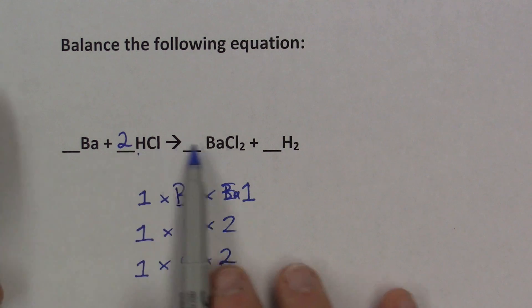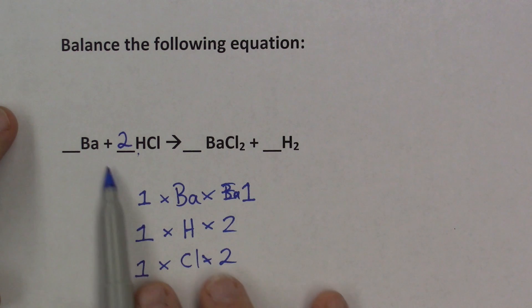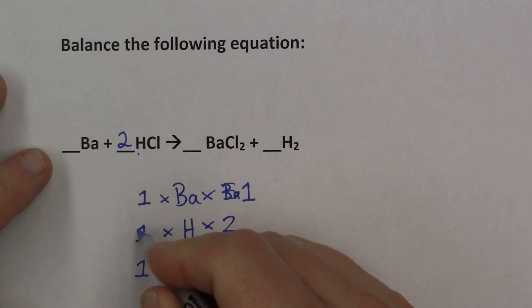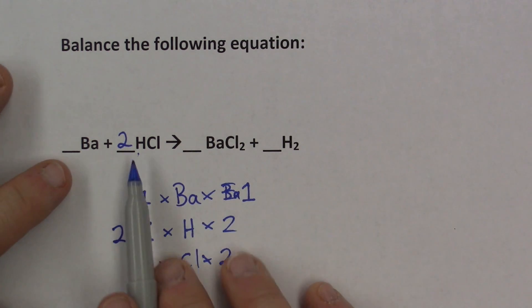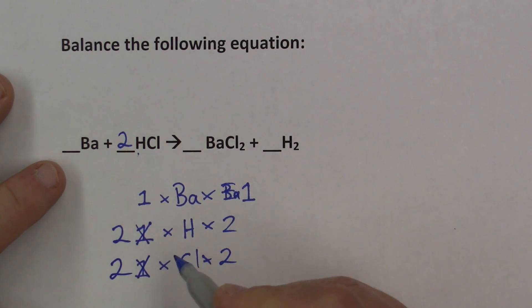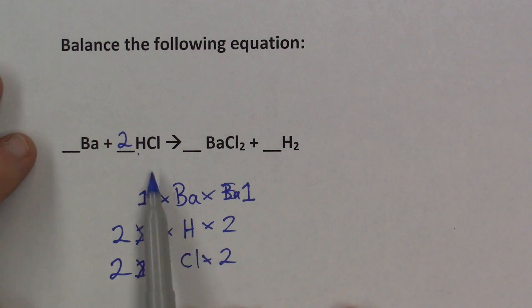So now we have to go through the entire equation again, and readjust our numbers. 1 barium, so there's still only 1 barium on the left. Now we have 2 hydrogen, so let's put an X through that, and the number 2. We have 2 hydrogens on the left. But we also have 2 chlorine on the left. 2 chlorine on the left. 1 barium, 2 chlorine, 2 hydrogen. That actually balances the equation, just putting the 2 here.